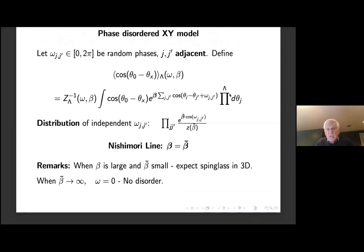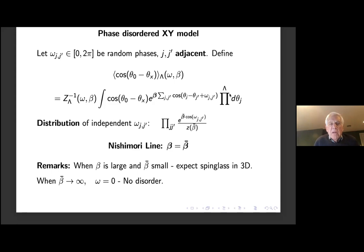Let me go to the case we'll be considering for the most part today, which is the disordered case. This is the phase-disordered XY model — there's an SU(2) version of it as well. We're going to consider the spin-spin correlation with the XY model, but we'll introduce random phases which try intuitively to disorder the system. These random phases I'll call Omega_IJ, and they are associated to each edge of my lattice.